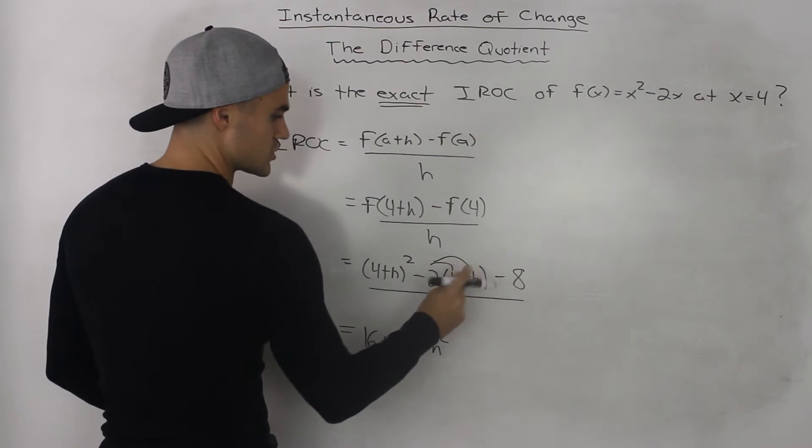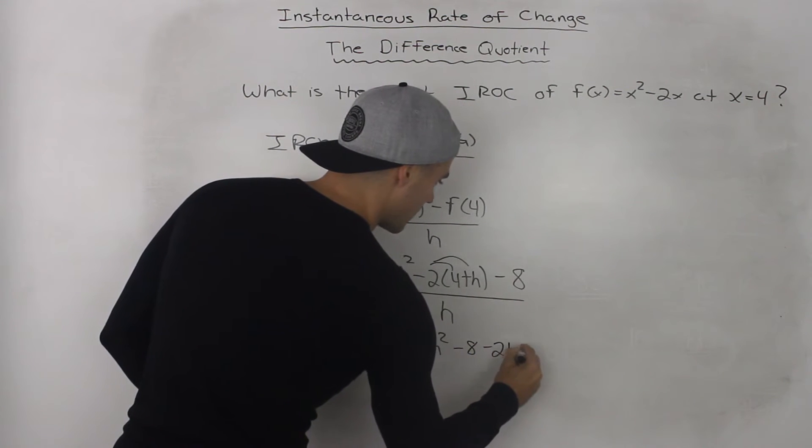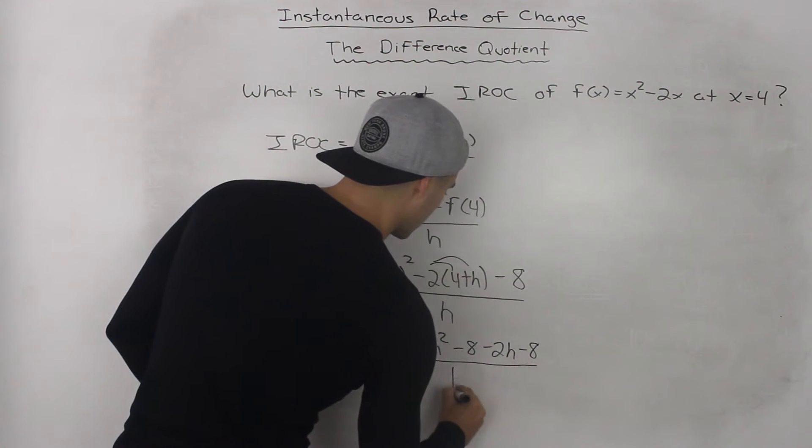And then let's distribute this 2 inside the bracket, this negative 2. So we'd have minus 8 minus 2h minus 8. And this is still all over h.